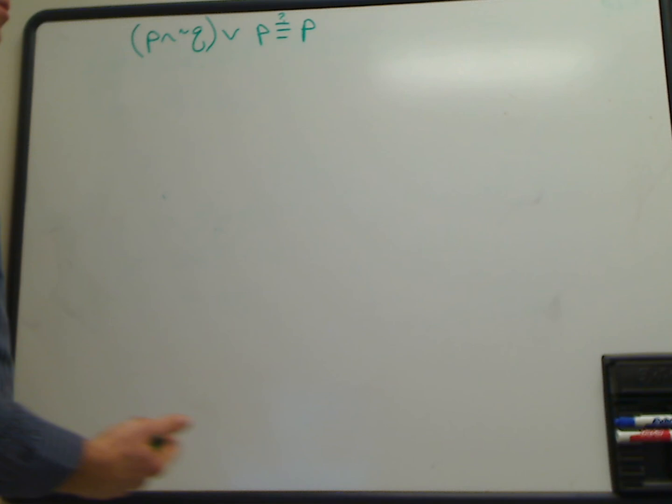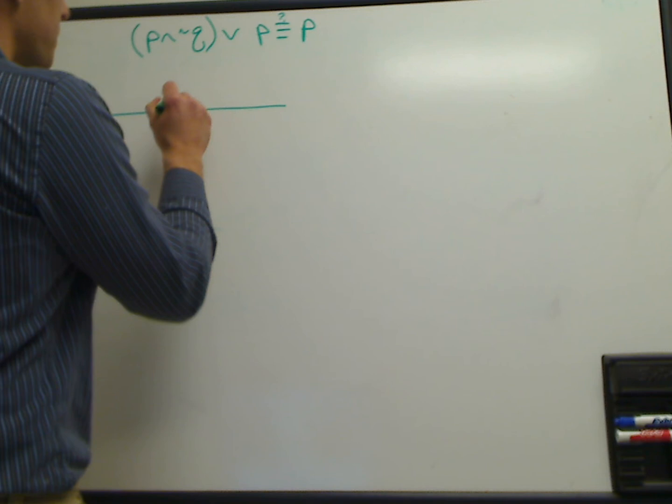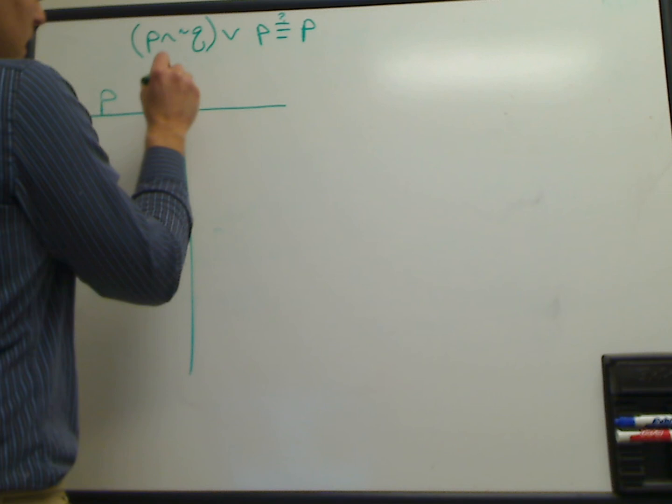The way we show logical equivalence is with a truth table. So we start out by building our truth table. In this case we have two variables, so our truth table on the left-hand side is going to have P and Q. So we'll build this table here.